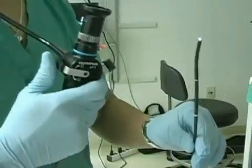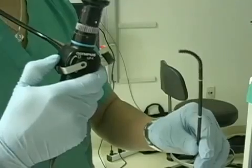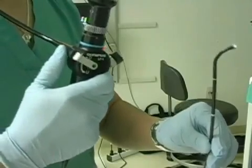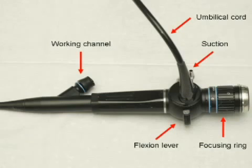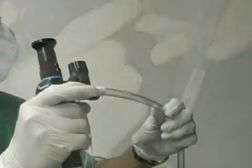The handle of the bronchoscope is fitted with a lever, which controls flexion and extension of the tip of the bronchoscope in a single plane. The handle also contains the proximal port of the working channel, which extends distally to the tip of the scope. This channel can be used to pass various instruments into the airway, and can be used for irrigation, administration of medications, and suction.